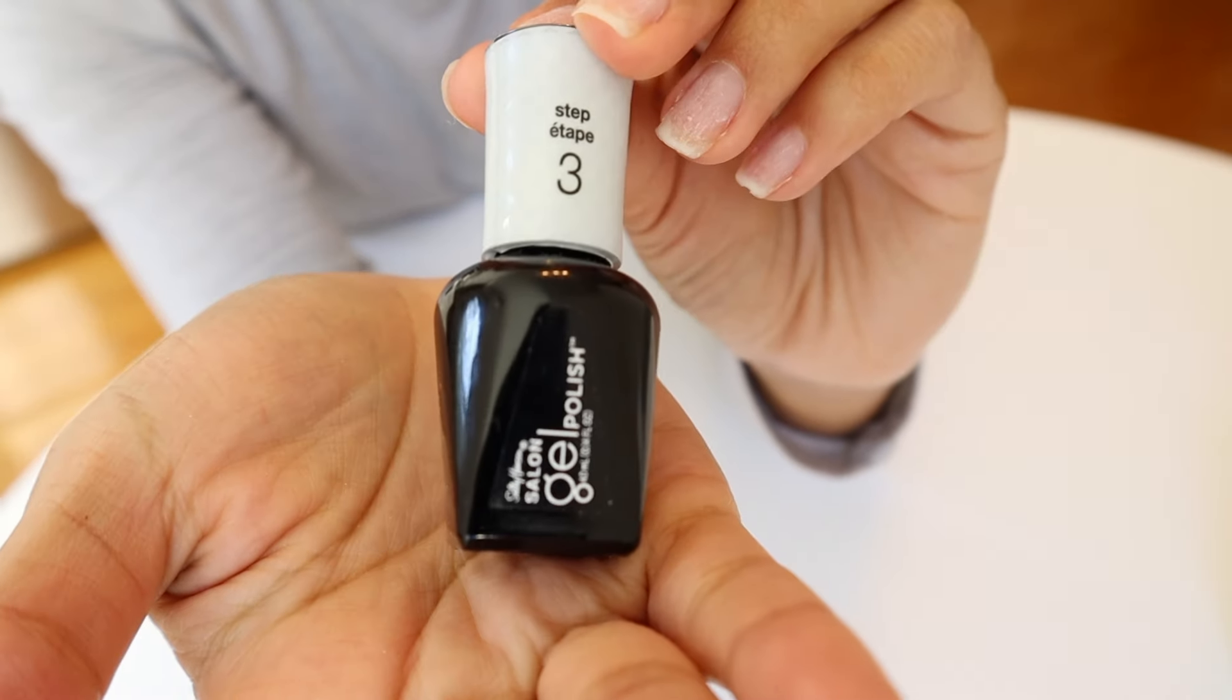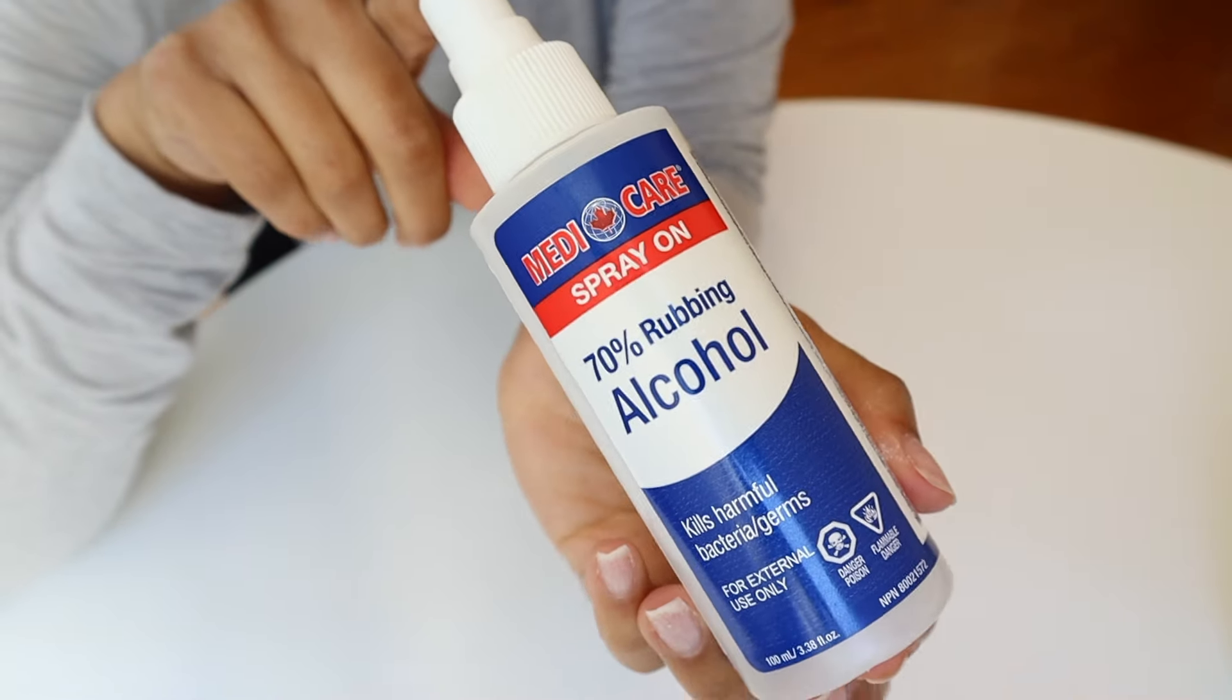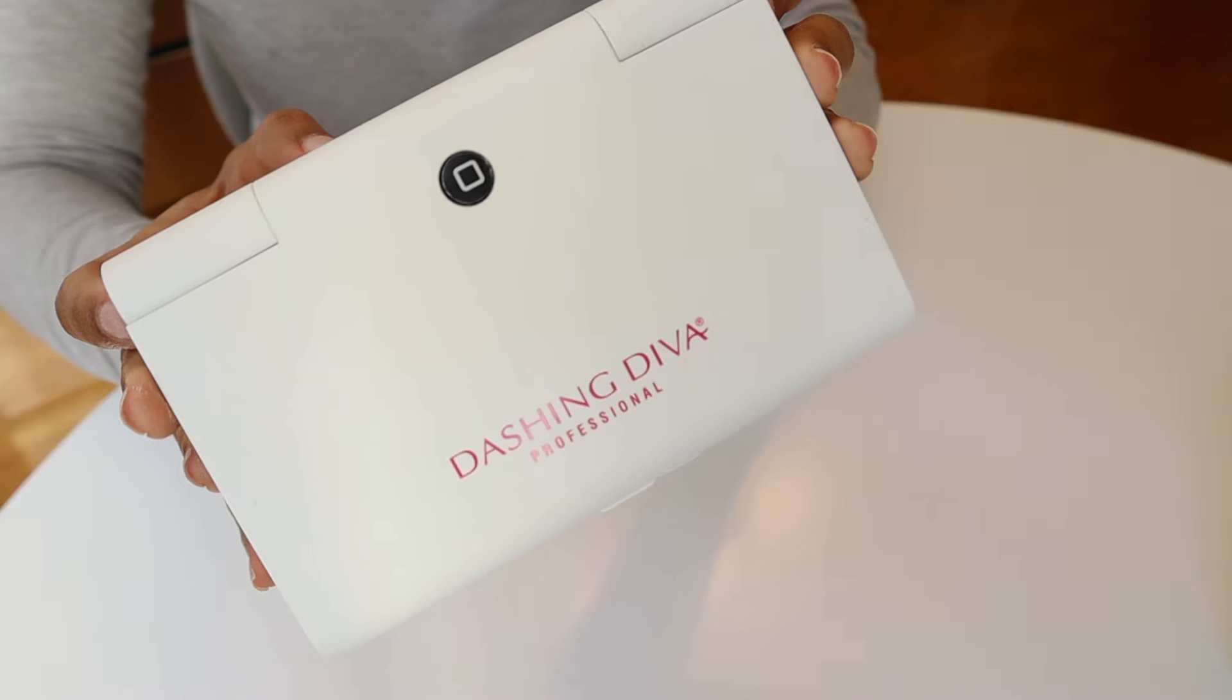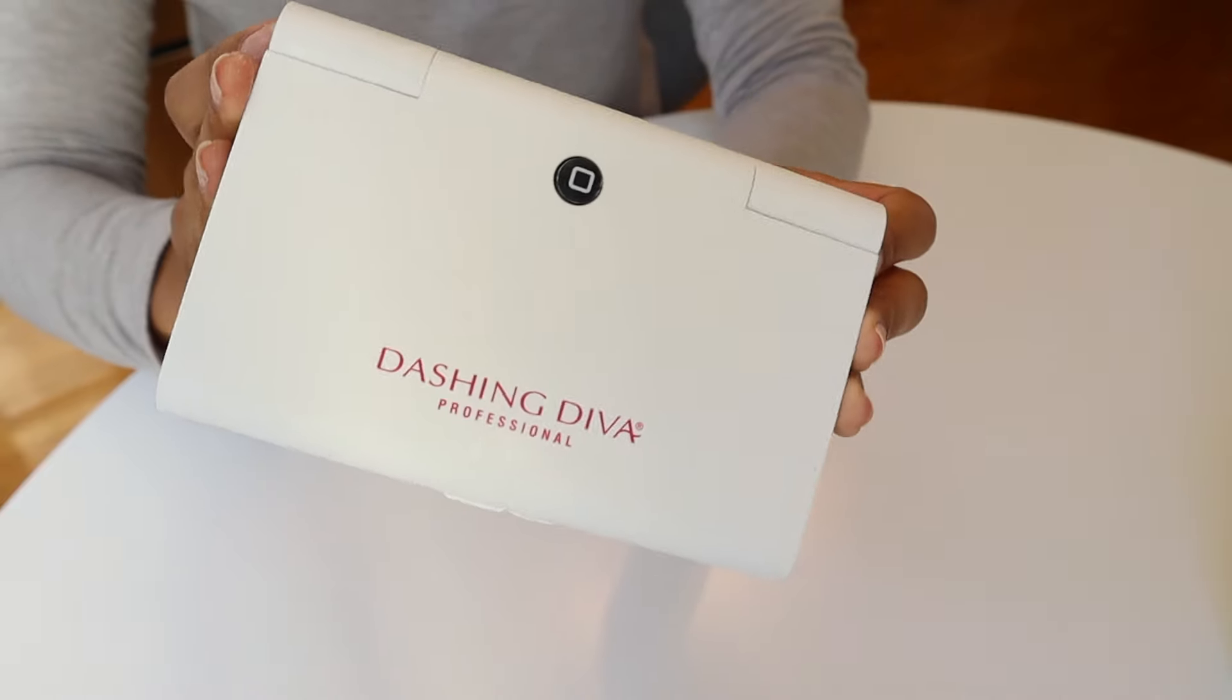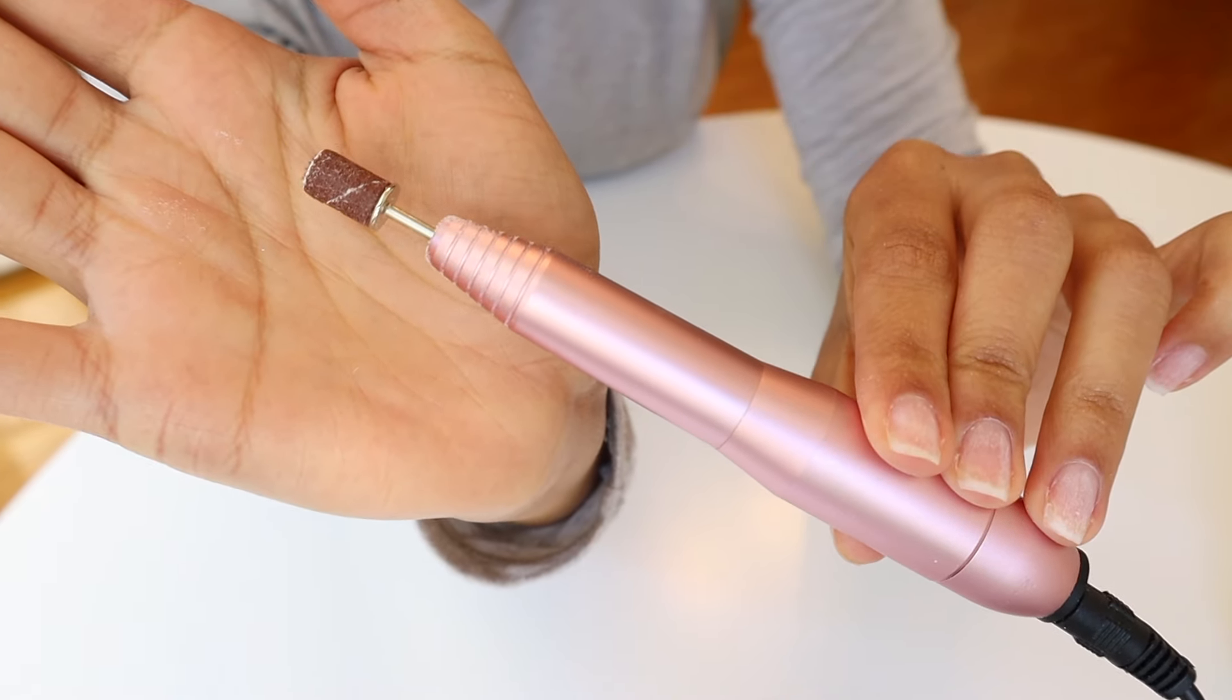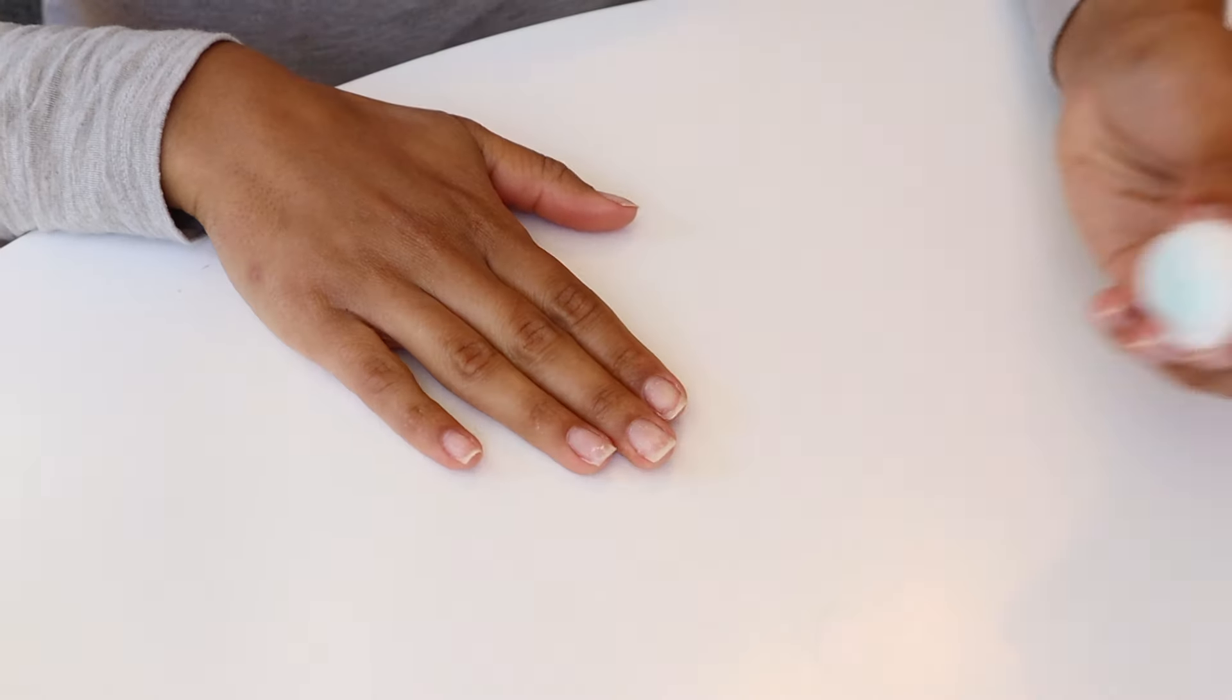You're also going to need some rubbing alcohol, your LED or UV lamp. I got this one from Amazon and the next thing is actually optional, which is an e-file. But if you don't have one you can use a regular nail buffer.